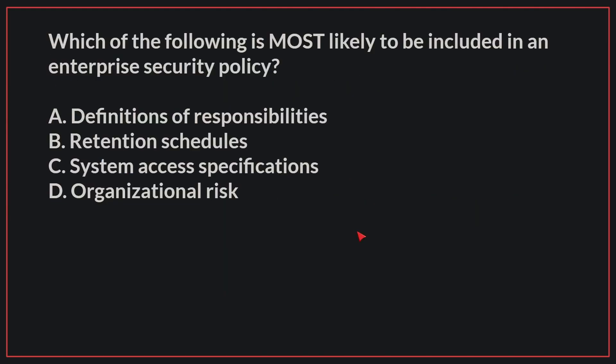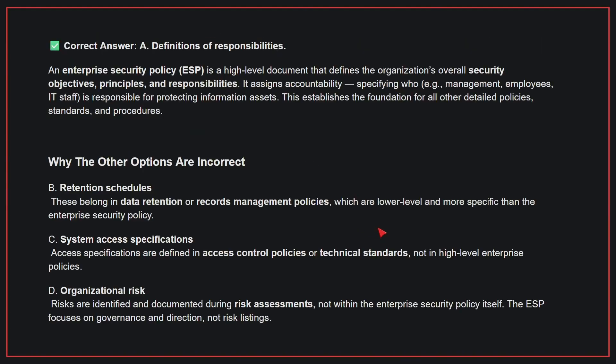Which of the following is most likely to be included in an enterprise security policy? The correct answer is A: definitions of responsibilities. An enterprise security policy is a high-level document that defines the organization's overall security objectives, principles, and responsibilities. It assigns accountability, specifying who is responsible for protecting information assets. This establishes the foundation for all other detailed policies, standards, and procedures.